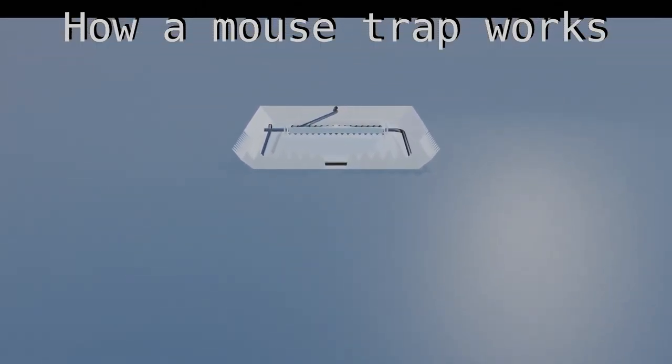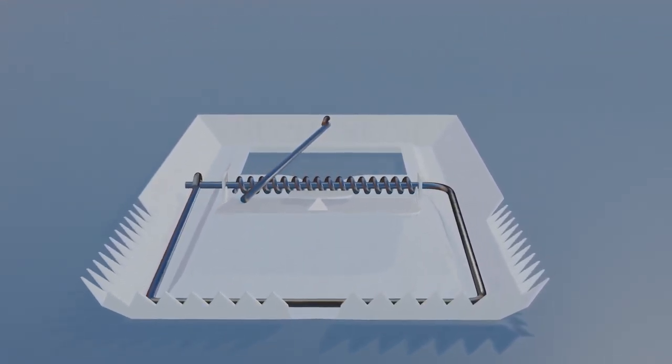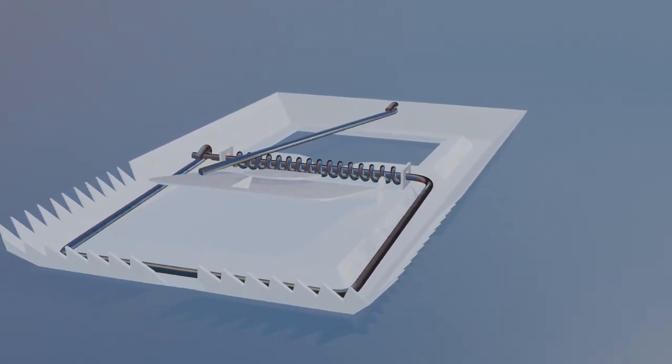In this video we're going to learn how a mousetrap works. The mousetrap is made up of five simple parts.